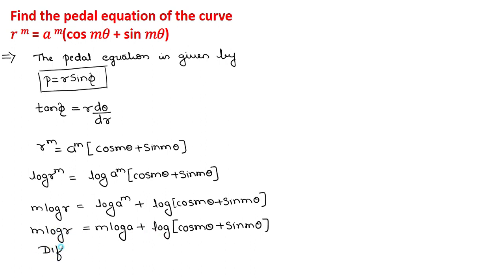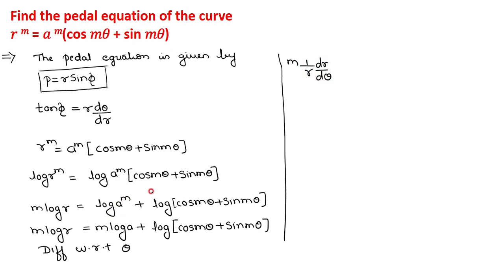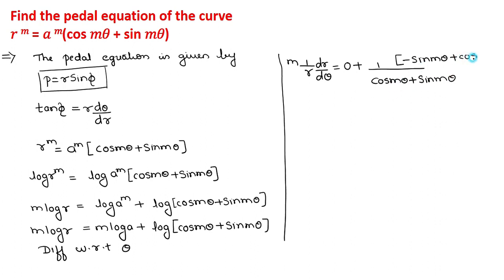Differentiating this equation with respect to θ: M is a constant, so the derivative of M log R is M · (1/R) · dR/dθ. The derivative of M log A is 0. The derivative of log(cos Mθ + sin Mθ) is 1/(cos Mθ + sin Mθ) multiplied by its derivative: the derivative of cos Mθ is −sin Mθ, and the derivative of sin Mθ is cos Mθ, with coefficient M in both cases.